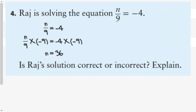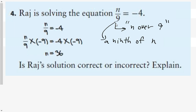The second question says Raj is solving the equation N over 9 equals negative 4. I want to make sure you understand how to pronounce that. People would usually say 'N over 9,' but that's just how you'd write it. It actually means a ninth of N, or N divided by 9, equals negative 4.